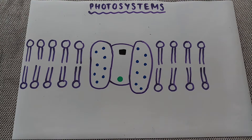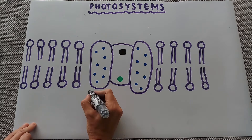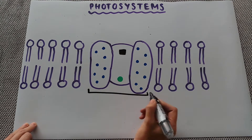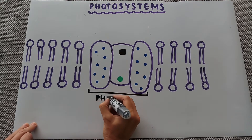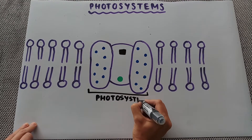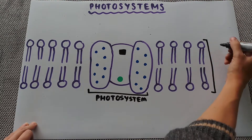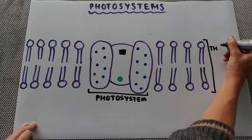In this video we're going to have a look at the photosystems. These are complexes that are used in the light dependent reactions of photosynthesis and they are found in the thylakoid membrane within the chloroplast. As you can see from this diagram here, this central section is the photosystem complex, found within the thylakoid membrane which is indicated by this phospholipid bilayer.